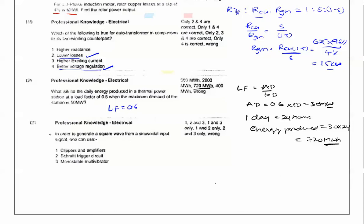Now the question here is, in order to generate the square wave from a sinusoidal input, one can use the Schmitt trigger. If you give the sinusoidal input to it, it will generate the square wave. Similarly, monostable multivibrator will also generate the square wave. So 2 and 3 are the right options here, so 2 and 3 only.